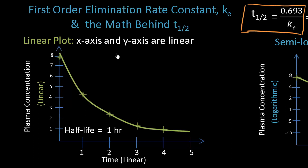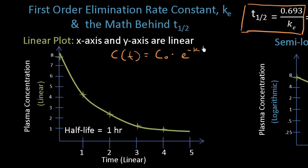As scientists, we want to know what the concentration is at any point in time. The equation that tells us this is: the concentration at time t is equal to your initial concentration times e raised to the negative k times t, where k is your first order elimination rate constant. From this equation, we can derive the half-life equation.